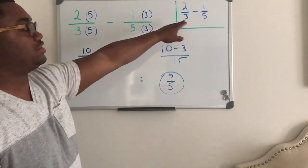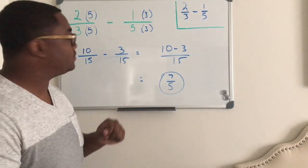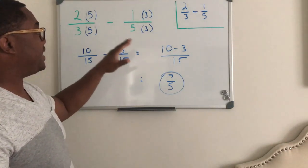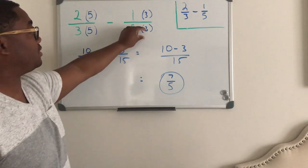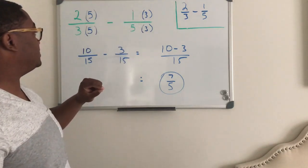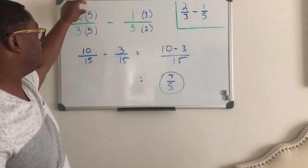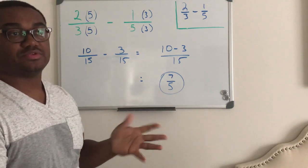And so what you need to do is you need to get a common denominator, and how we do that is the fact that three and five are prime numbers, and if we need to talk about this, we can.